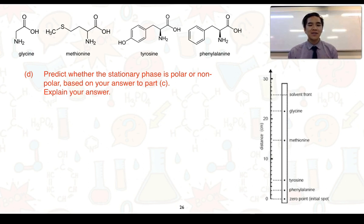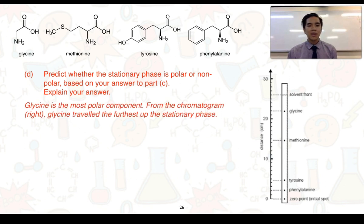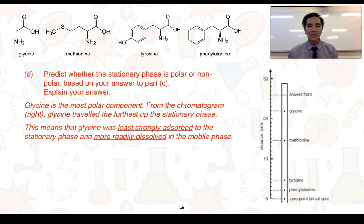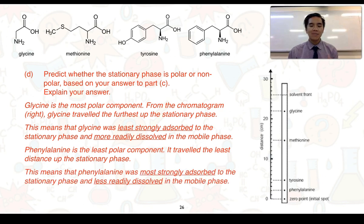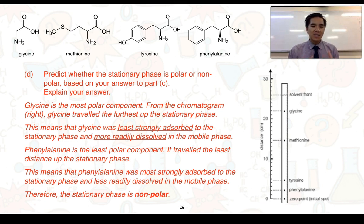Part D: predict whether the stationary phase is polar or non-polar based on your answer to part C. Glycine is the most polar component and travelled the furthest up the stationary phase — meaning it was least strongly adsorbed to the stationary phase but more readily dissolved in the mobile phase. Phenylalanine is the least polar component and travelled the least distance, meaning it was most strongly adsorbed to the stationary phase and less readily dissolved in the mobile phase. Therefore, the stationary phase is non-polar: it interacts more strongly with non-polar components and less readily adsorbs the more polar amino acids.